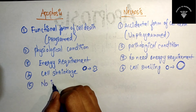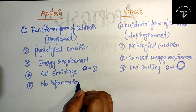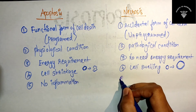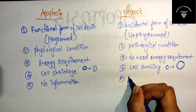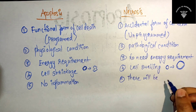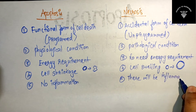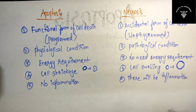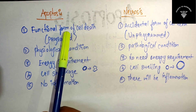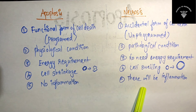Fifth difference: no inflammation is associated with apoptosis, whereas inflammation is followed by necrosis. These are the five simple differences between apoptosis and necrosis that you have to mention.